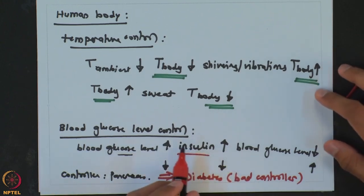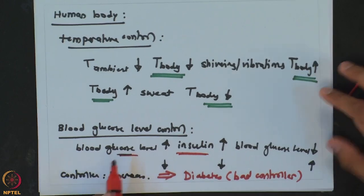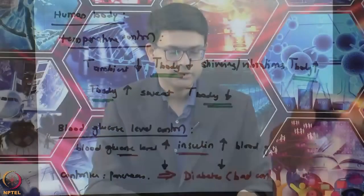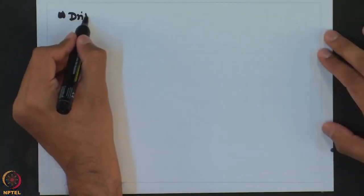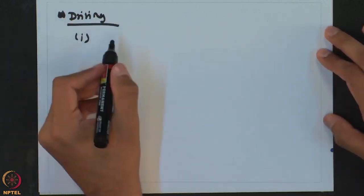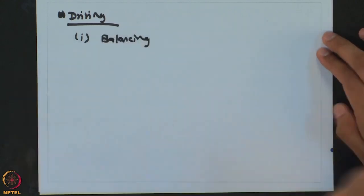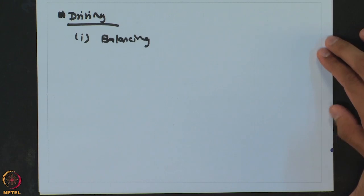Whenever this controller is not functioning properly, you get diabetes, meaning your blood glucose level cannot be maintained at the desired level. The insulin production rate in the body is not adequate to control the blood glucose to its desired value. Another commonly used example of feedback control by man is while we are driving. When driving a bicycle, balancing is also an example of feedback control.